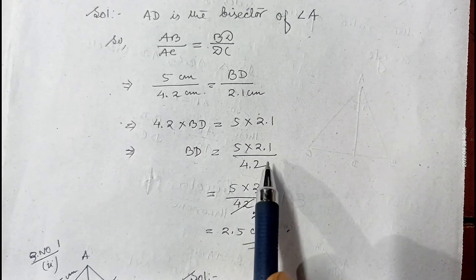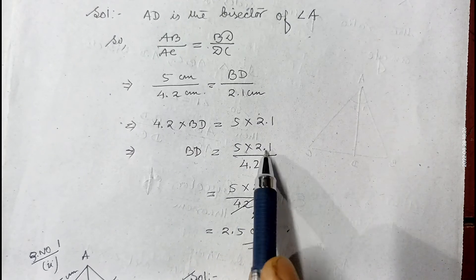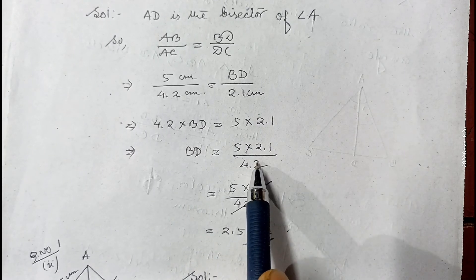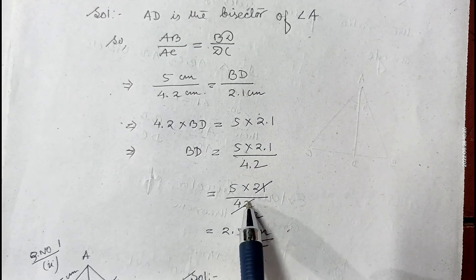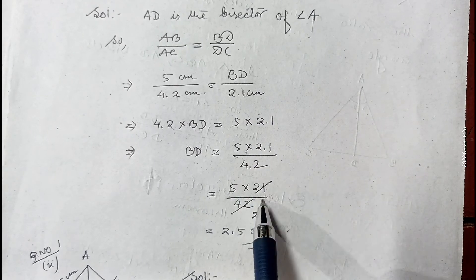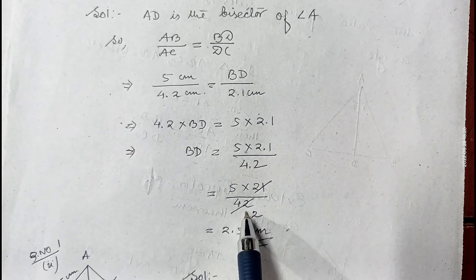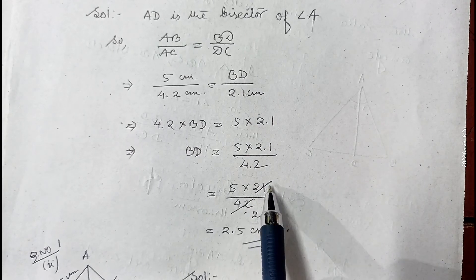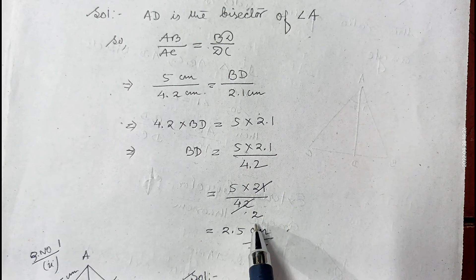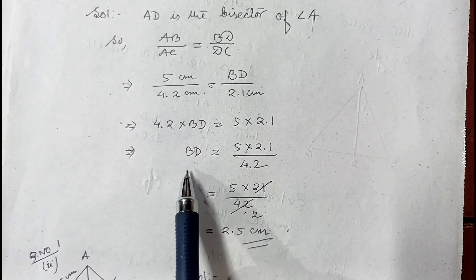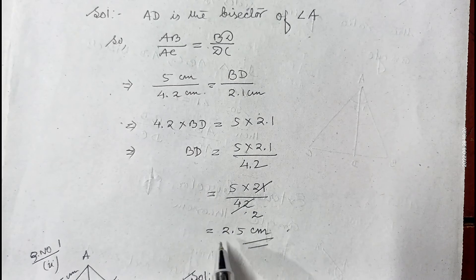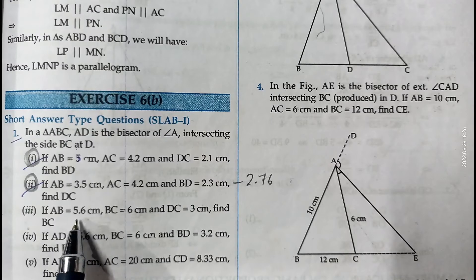Multiplying 2.1 and 4.2 by 10 gives 21 and 42, so it becomes 5 into 21 by 42. Cancelling 21 and 42 gives 2, so BD equals 5 by 2, which is 2.5. Therefore the required length of BD is 2.5 centimeters.